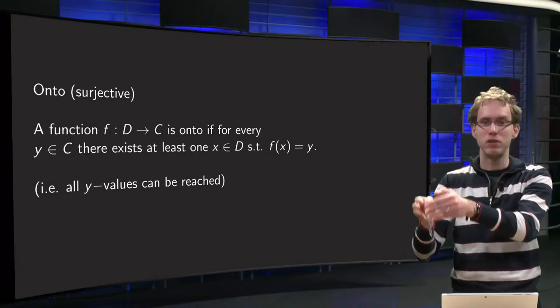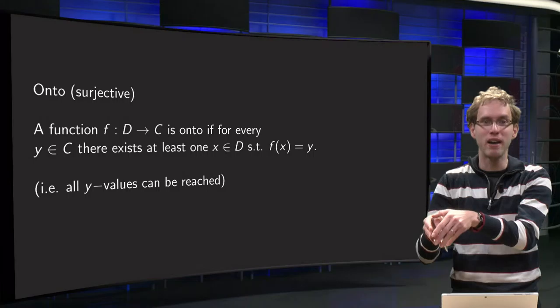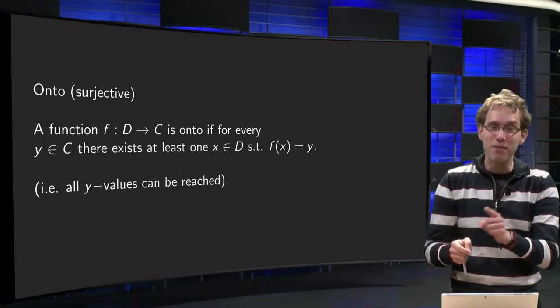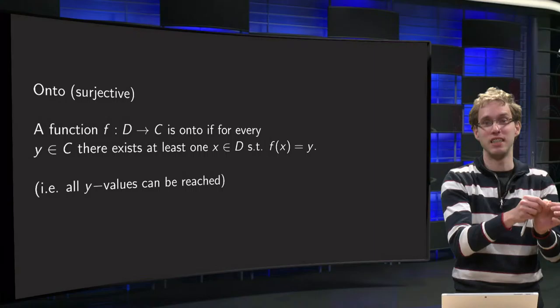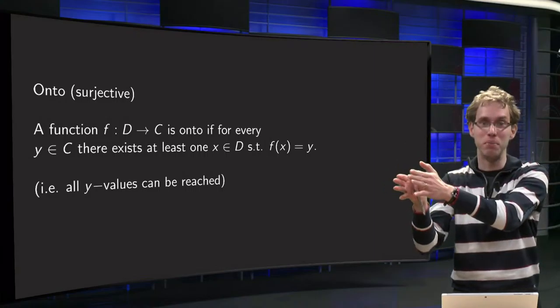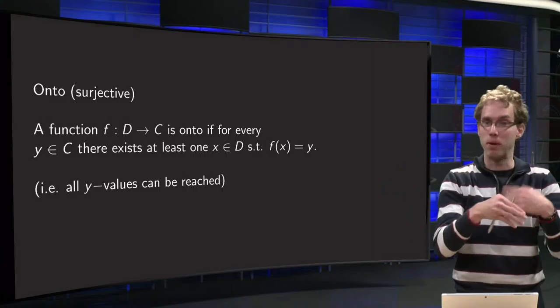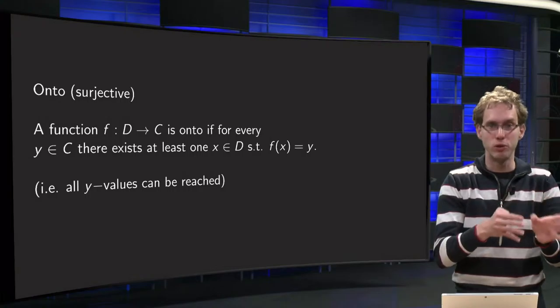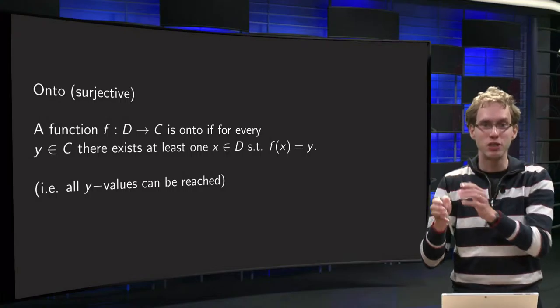You have your codomain with all function values y and you can reach every single one of them with at least one x in the domain. And every y can be reached by at least one or maybe more x's. That is not so important for onto, but you can reach all of them.